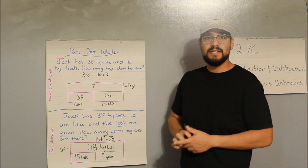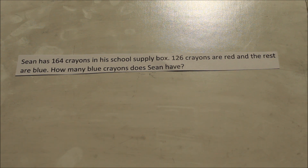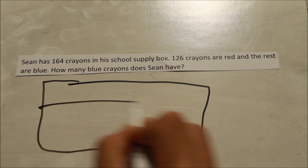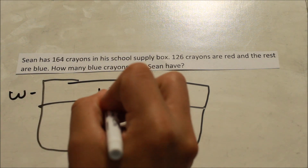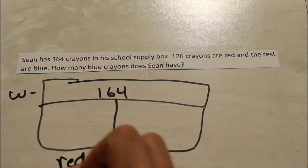Let's go to the desk. Sean has 164 crayons in his school supply box; 126 crayons are red and the rest are blue. How many blue crayons does Sean have? Out of those 164, 126 are red and the rest are blue. That means I have a part-part-whole. My whole is 164 because that's how many crayons he has. My one part is 126 red crayons, and the rest are blue.